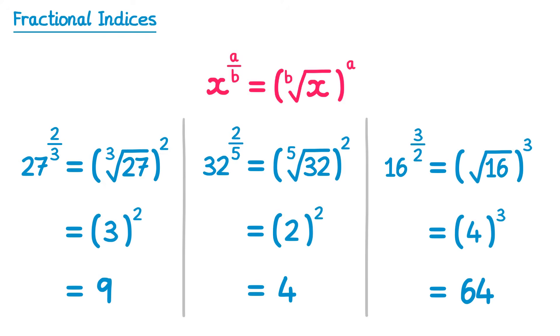It's also possible to do these in reverse order — so for the first question, if you really wanted to, you could do 27 squared first and then take the cube root of that. But in most cases it's going to be easier to do the root first and then raise it to the power afterwards.